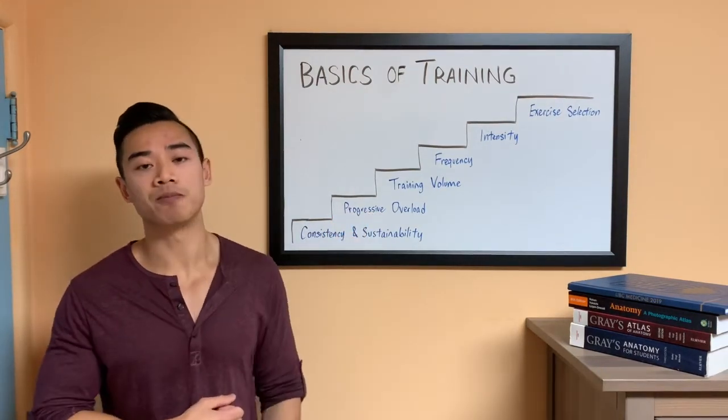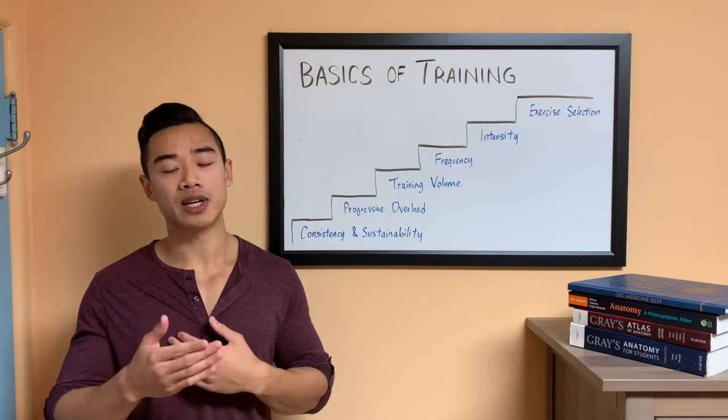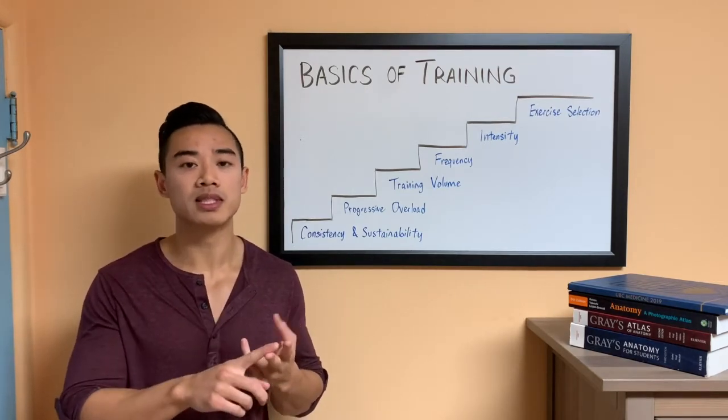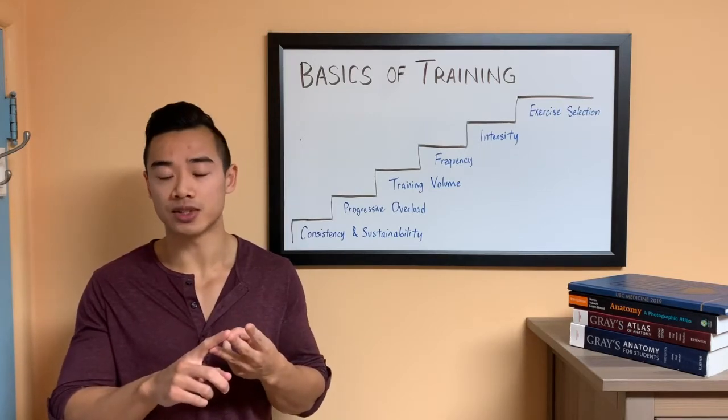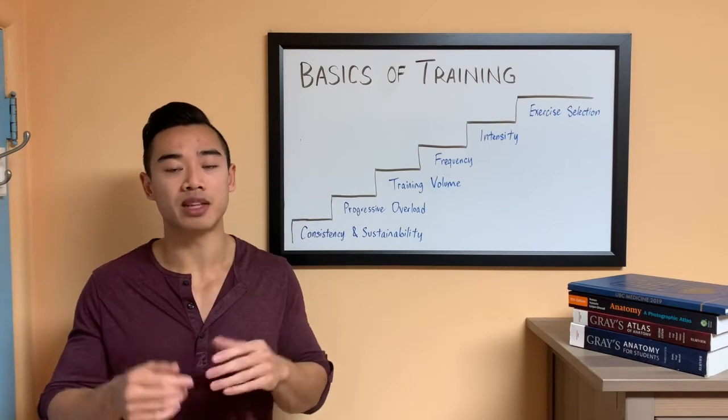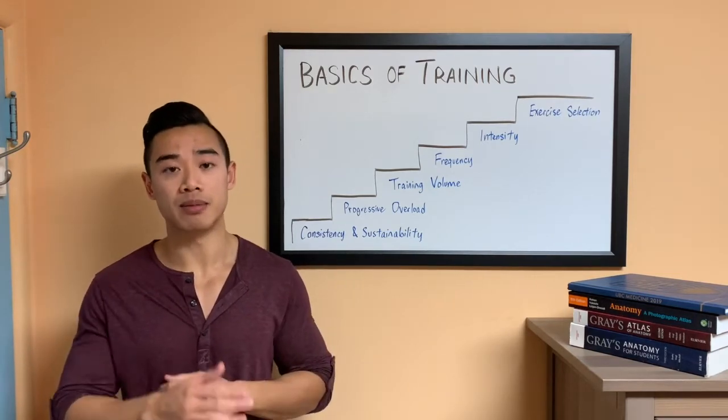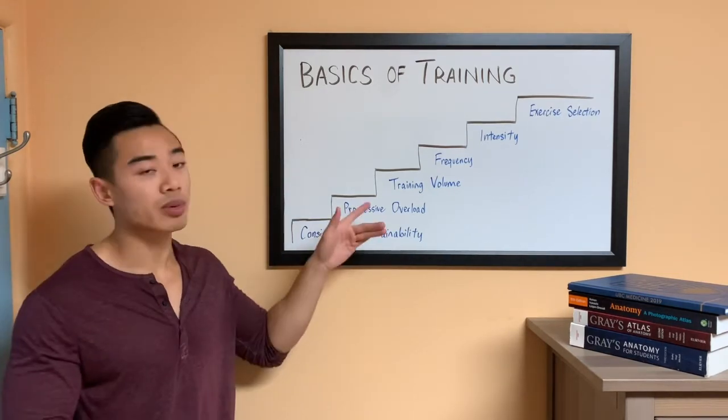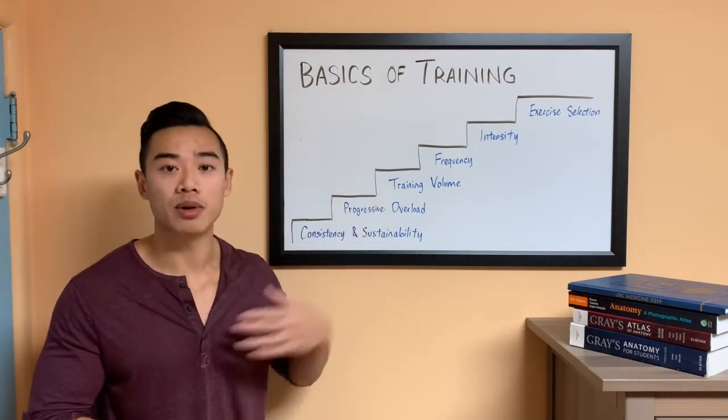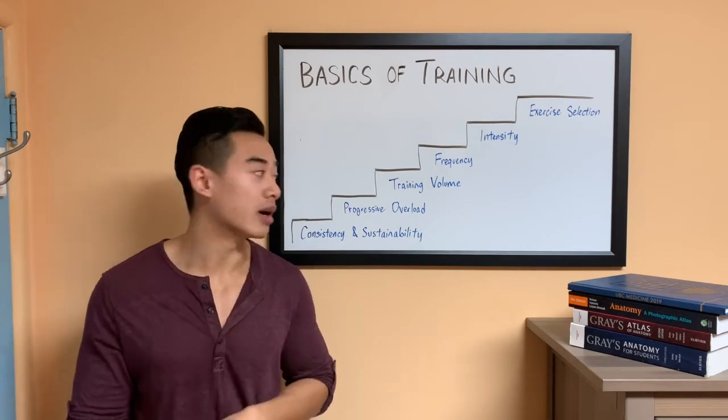Training volume in the literature has been defined as the number of sets you do times the number of reps times the weight used on an exercise. This can be approximated by the amount of work you're doing for that muscle. This is a really important concept. It's hotly debated in the literature, and we will talk about how much training volume you need to do in your program.